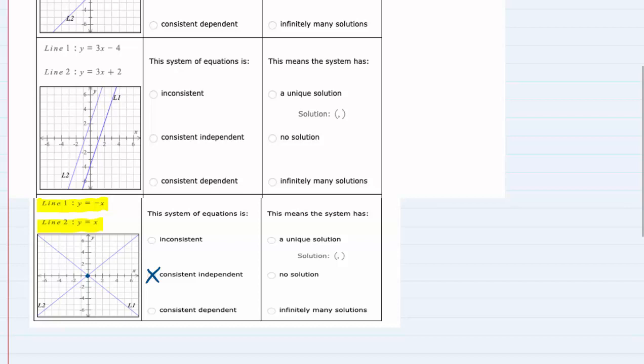The fact that there is one point solution means it's a unique solution and when that happens here we're asked to give the coordinates of that solution. Since it's happening exactly at the center of this graph the coordinates there are 0, 0.